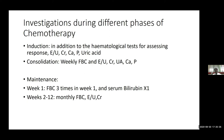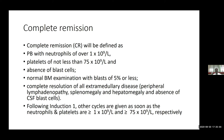For definition of complete remission, we define this as patients who have peripheral blood neutrophils over 1,000 cells per litre, platelet counts over 75,000 per litre, absence of blast cells, and normal bone marrow with blasts of 5% or less. Complete resolution of all extramedullary disease is also required — peripheral lymphadenopathy, splenomegaly, and hepatomegaly should have resolved, and there should be no blast cells in CSF. Following induction 1, all other cycles are given as soon as neutrophils and platelet counts meet the specified criteria.